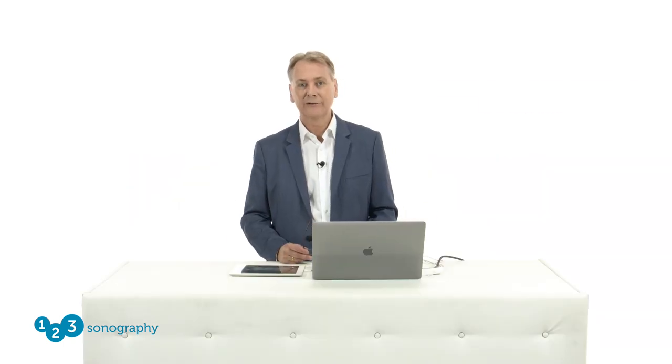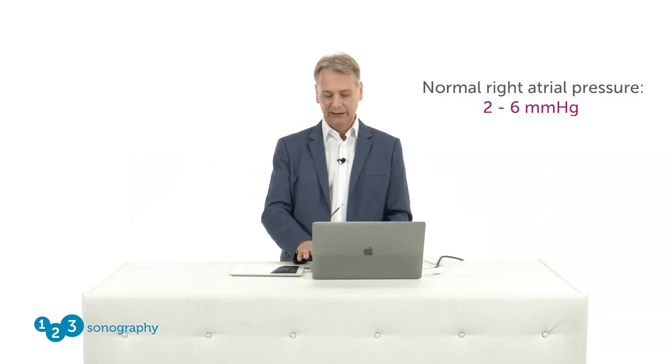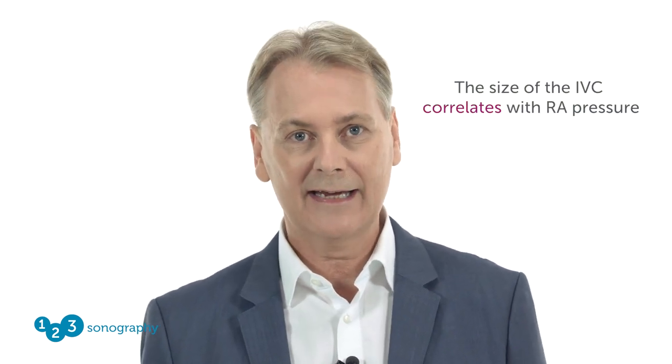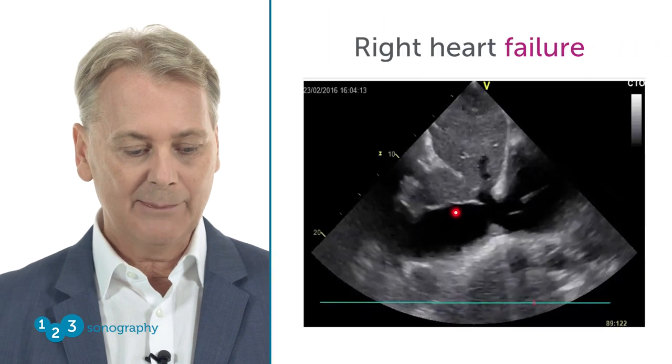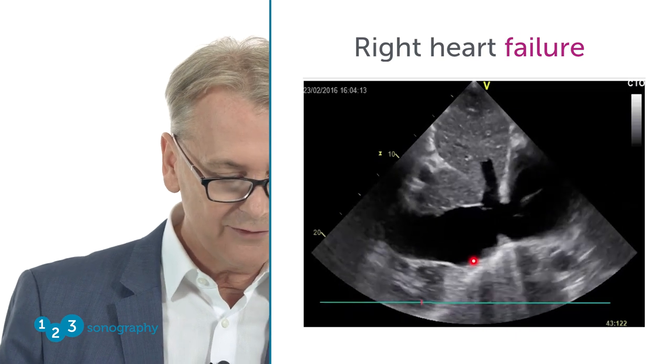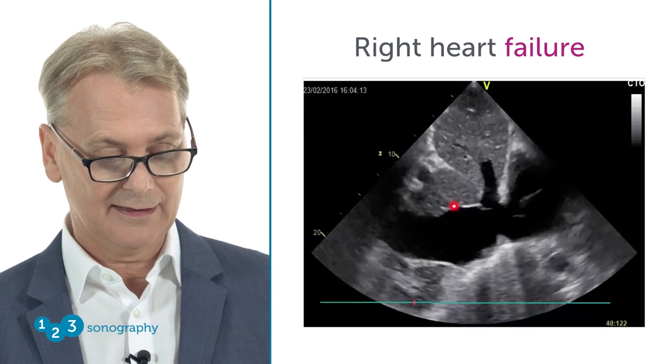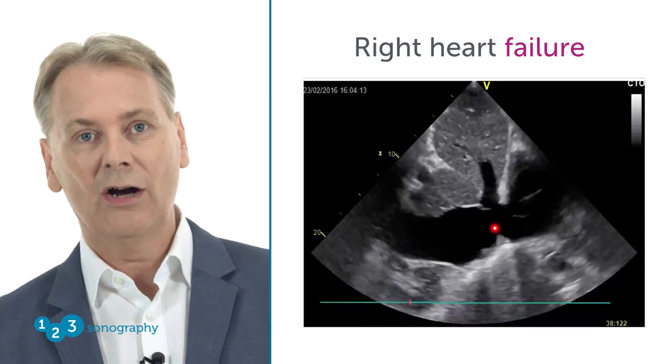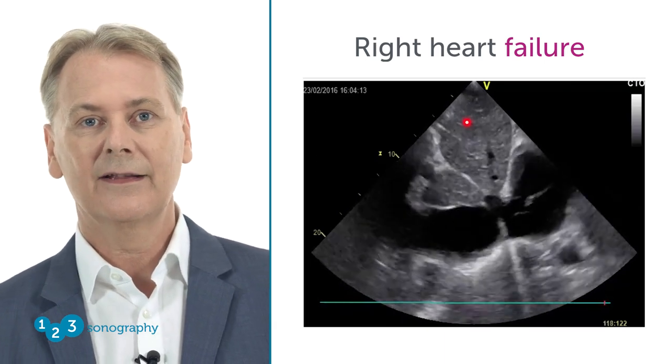What is a normal right atrial pressure? It's somewhere in the range of 2 to 6 millimeters of mercury. And what happens if right atrial pressure increases? Well, it translates into the IVC and into the SVC. Usually in echocardiography we assess more of the IVC, and there we can see the effects of an increase in pressure by just looking at the size of the IVC. This is an example of a massively dilated IVC — it's probably somewhere in the range of 4 or 5 centimeters, one of the largest IVCs I've actually seen. Not only does the IVC expand, but it also dilates the hepatic veins.